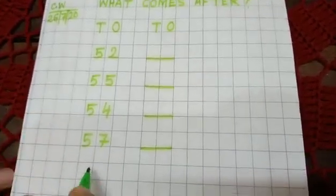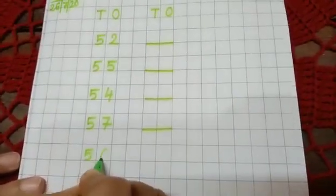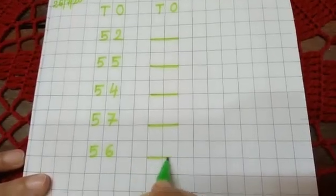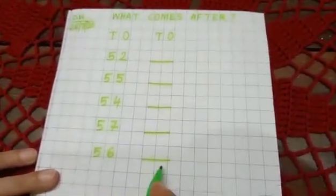Now next one is? Five, six—fifty-six dash. Okay children. Fifty-six. Next number.